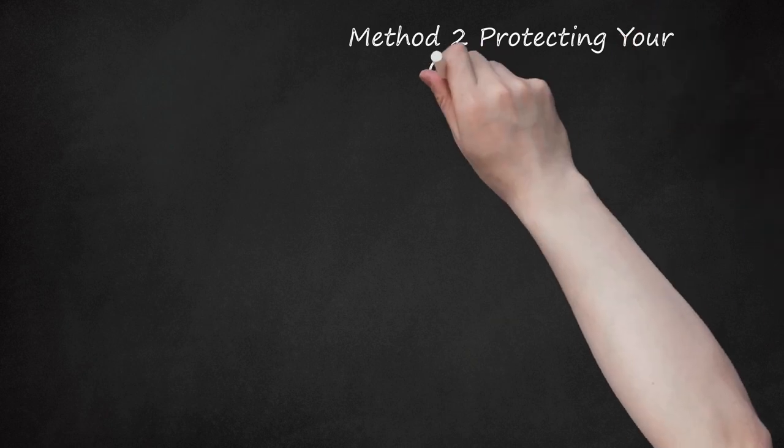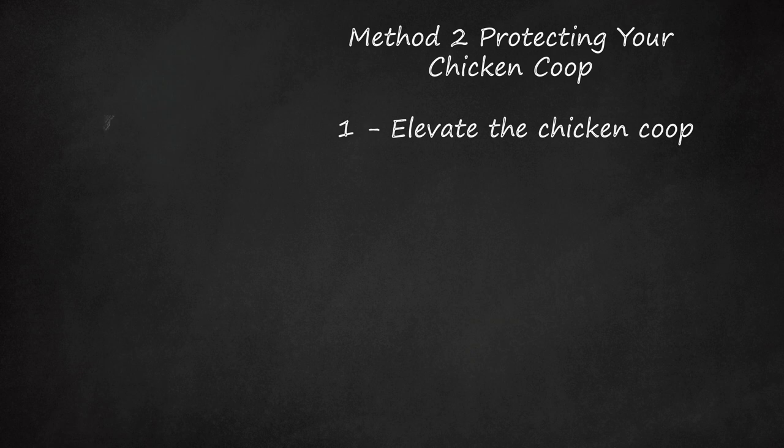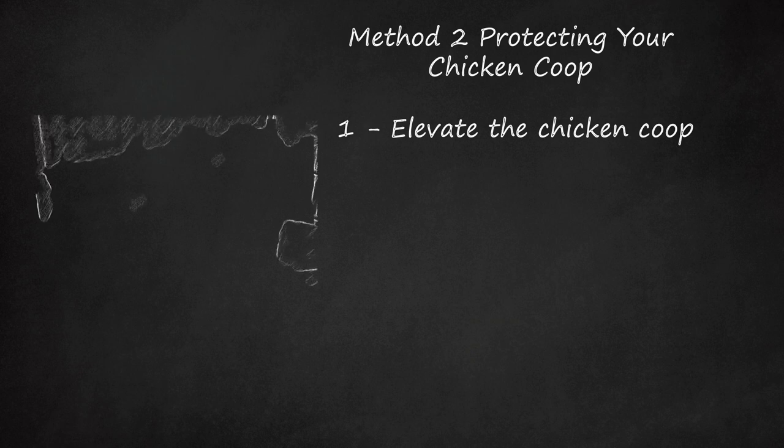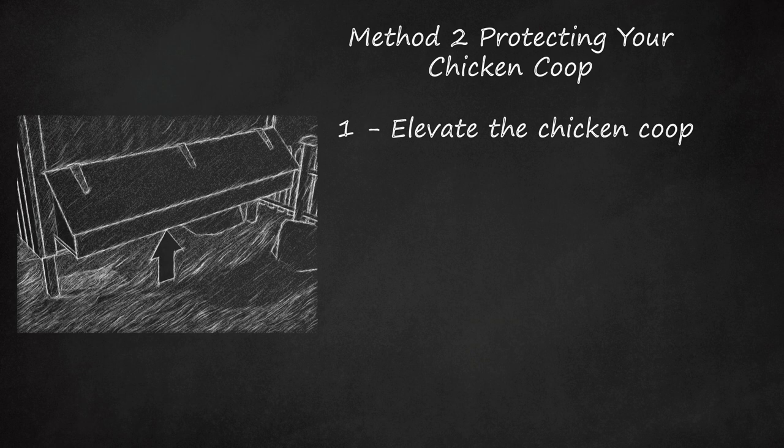Method 2: Protecting Your Chicken Coop. Step 1: Elevate the Chicken Coop. It's a bad idea to have a chicken coop that sits directly on the ground. This will provide easier access for predators like fisher cats, who are very sneaky. Having your chicken coop sit directly on the ground will also result in poor air circulation and rot. Instead, raise the chicken coop up about one foot or more off the ground. This should make it harder for small predators to get into the coop. The other advantage of the elevated coop is that it can provide protection from hawks for free-ranging chickens.